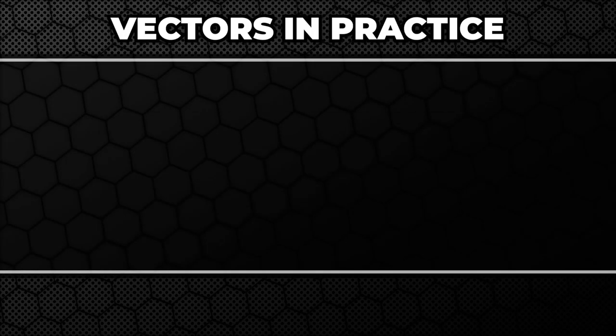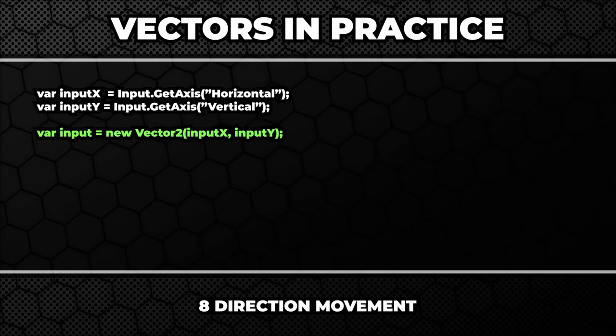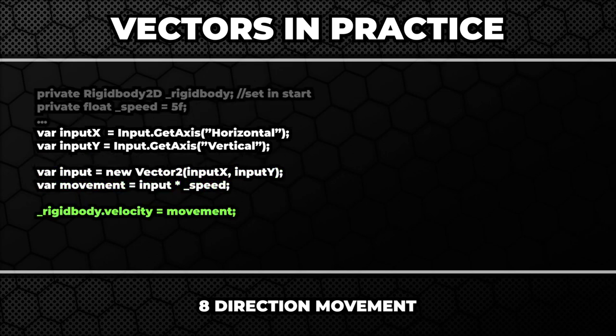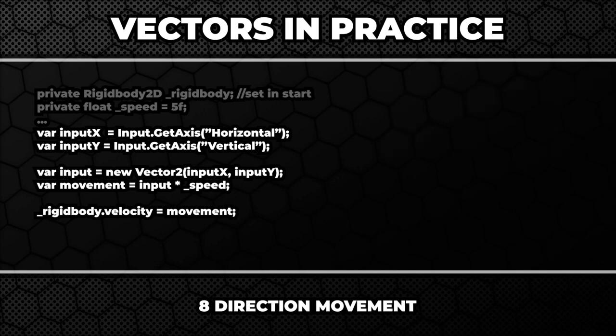Now let's have a look at some examples of using vectors. The first one will be typical 8-direction movement. We gather horizontal and vertical input and combine them into an input vector, then multiply this vector by a certain speed and apply it to the rigidbody's velocity. Now we have a little problem — our character will move slightly quicker when moving diagonally, because the diagonal input vector has a slightly longer magnitude. To fix that we can simply normalize the input vector and then multiply it by speed.